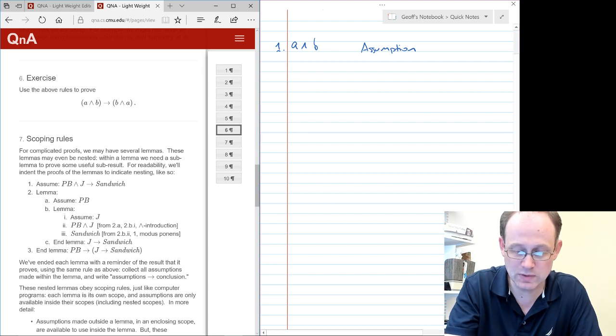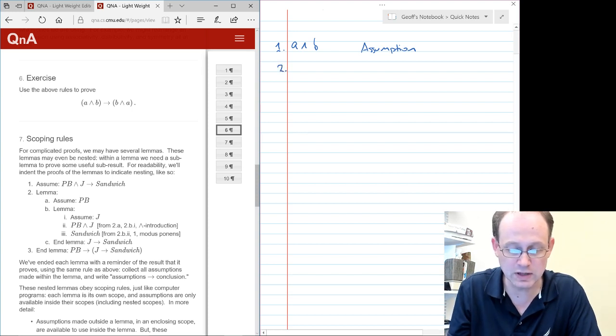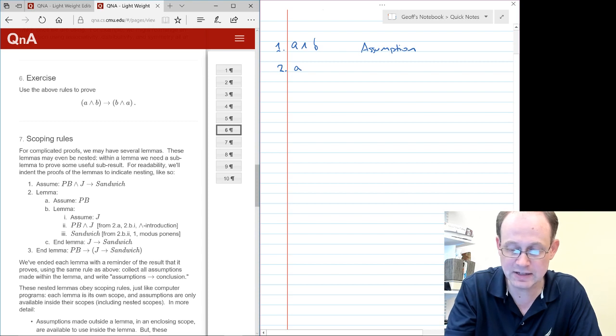Next, what we're going to do is use AND elimination to get A by itself. So that's by AND elimination from line one.